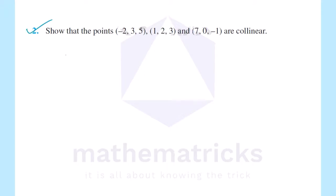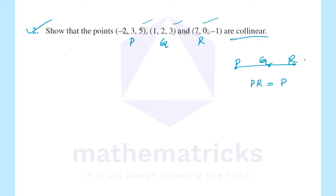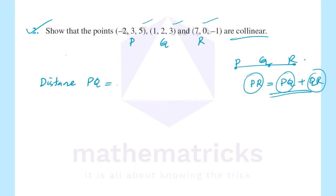Second question: show that the points (-2, 3, 5), (1, 2, 3) and (7, 0, -1) are collinear. For collinear points, we prove the points lie on one line. The condition is PR equals PQ plus QR. First, find distance PQ.